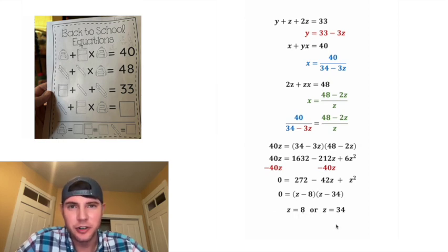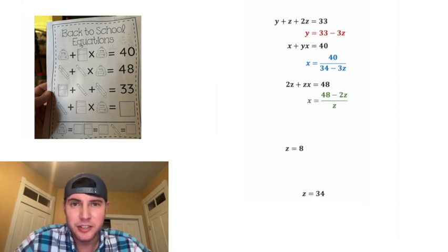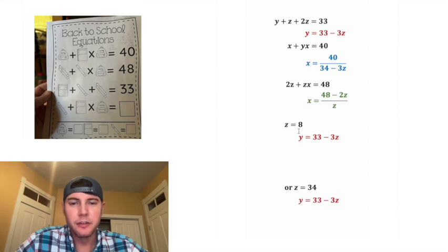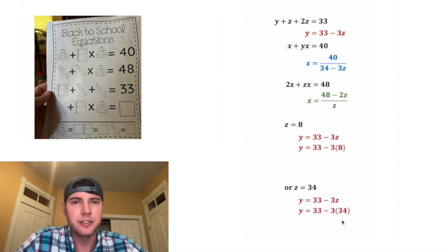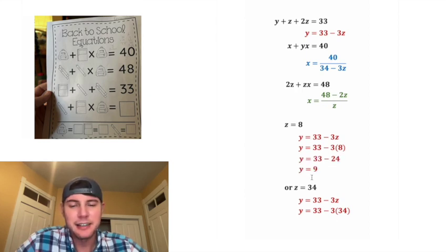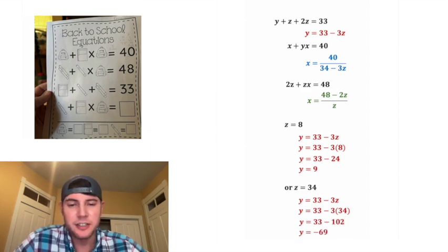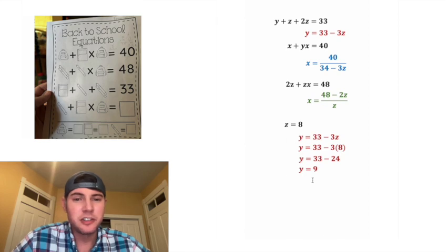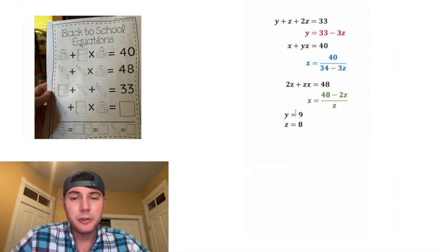Let's try out both scenarios using y = 33 minus 3z. Plugging in z = 8: 3 times 8 is 24, and 33 minus 24 is 9. Plugging in z = 34: 3 times 34 is 102, and 33 minus 102 is negative 69. But we can't have a negative number of notebooks, so z = 34 is not a valid solution. So we have y = 9 and z = 8.